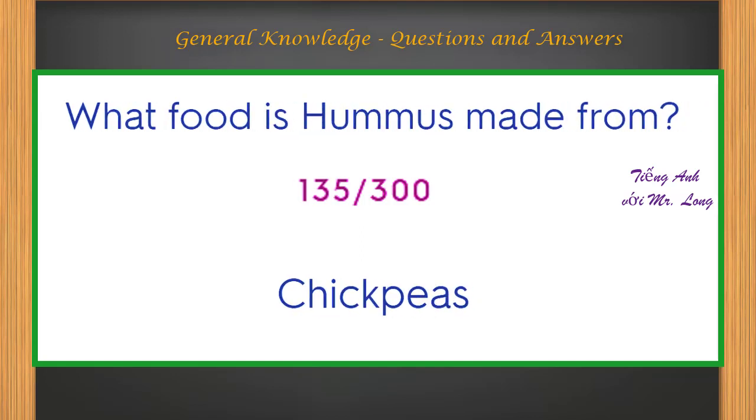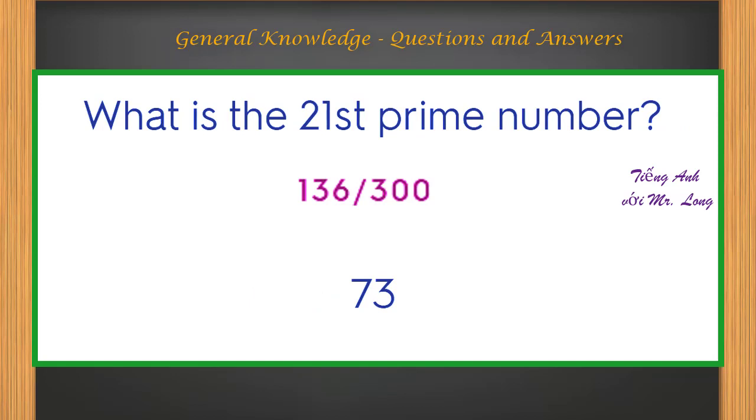What food is hummus made from? Chickpeas. What is the 21st prime number? Seventy-three.